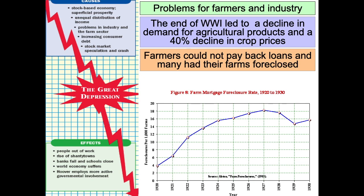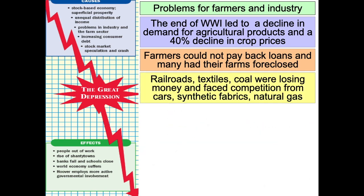Look at the level of farm mortgage foreclosures — people were losing their farms. So on top of this overproduction and underconsumption problem, we also had a crisis in farming. And in addition to that, railroads, textiles, and coal companies were losing money from new inventions like natural gas, cars, and more synthetic fabrics. So some innovations also affected industry in negative ways. Farmers and producers of certain goods were really taking a hit at the end of the 1920s.